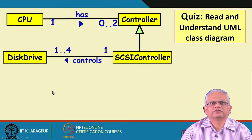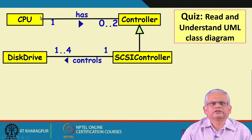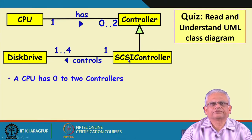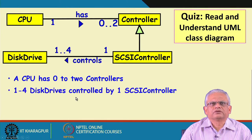Let us look at another UML class diagram. A CPU has up to two controllers; a controller is with exactly one CPU. A SCSI controller is a special type of controller. A SCSI controller controls one to four disk drives, but a disk drive is controlled by exactly one SCSI controller.